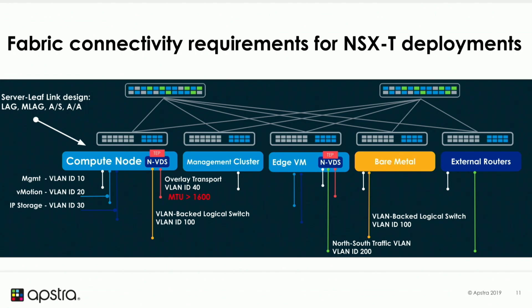Once you've made those choices, you can look at the connectivity requirements for your NSX-T infrastructure. From the fabric perspective, you have to connect all the different VLAN IDs that your infrastructure will generate. For example, compute nodes generate management traffic on one VLAN, vMotion traffic on another, and IP storage on another. All overlay communication between NSX-T nodes carrying VM traffic goes over yet more VLANs, and I want to isolate all those traffic types not only on the server but also in my fabric.